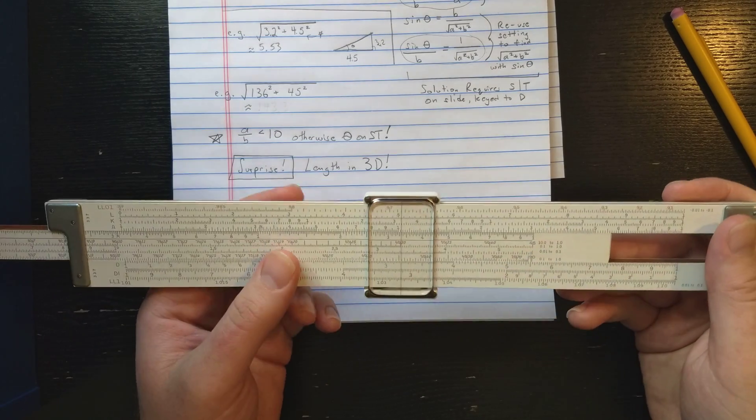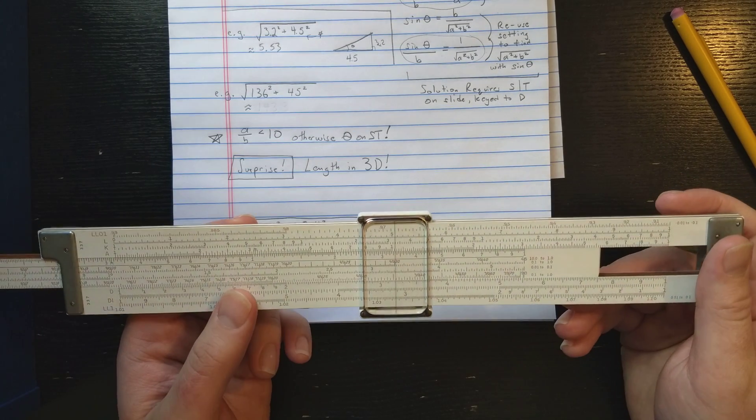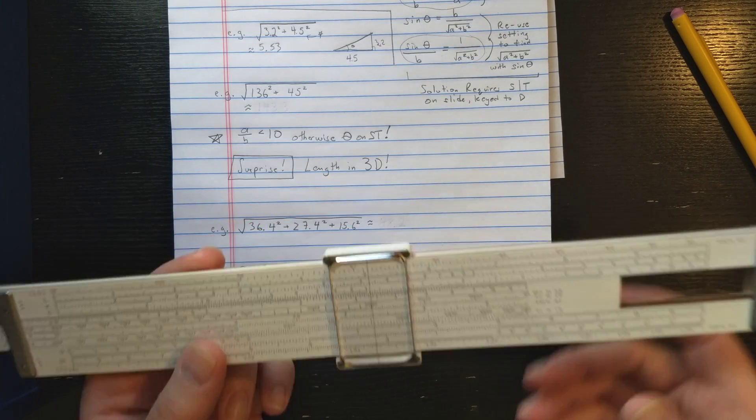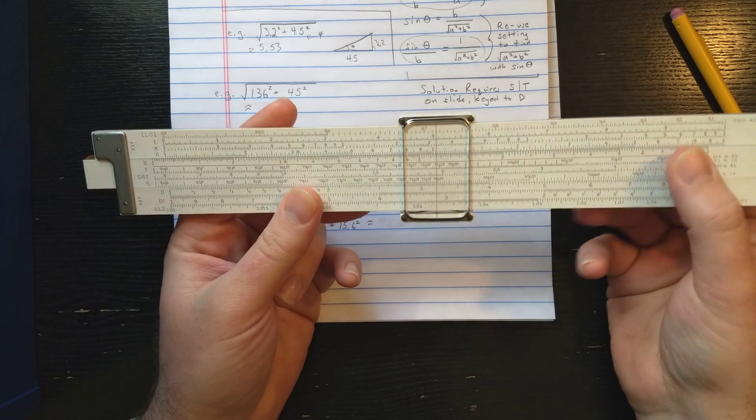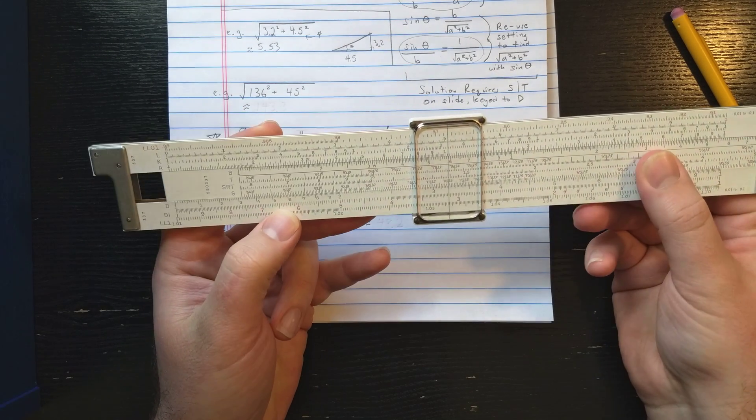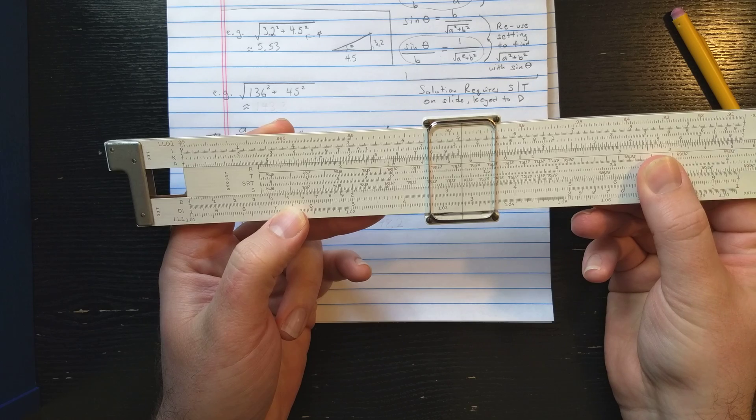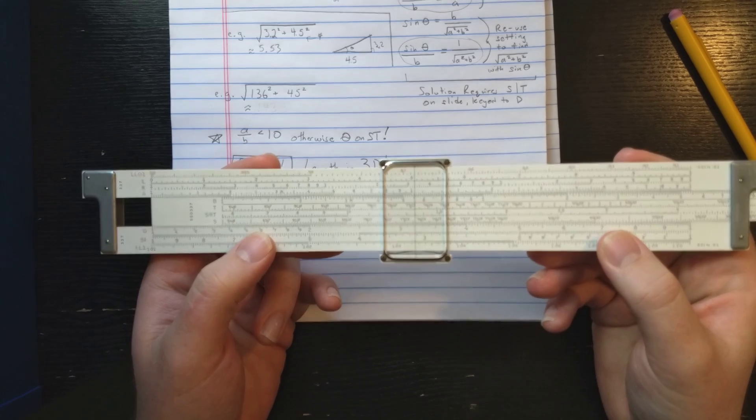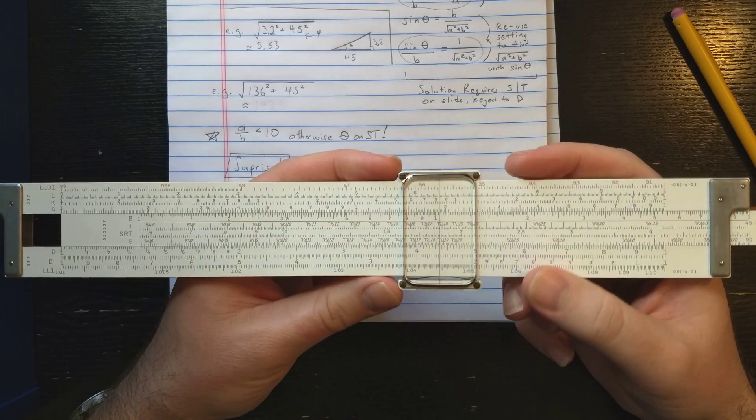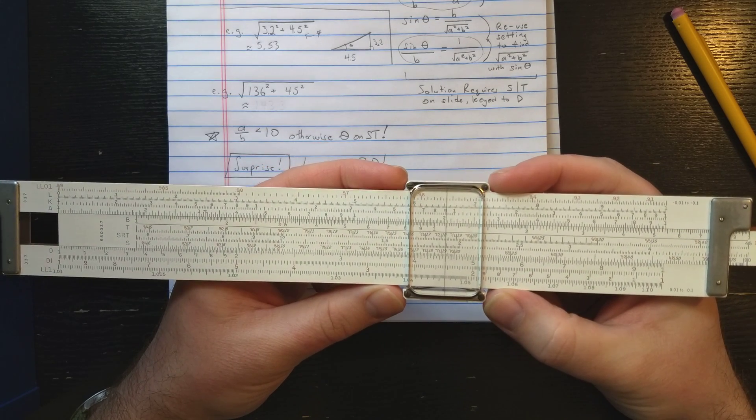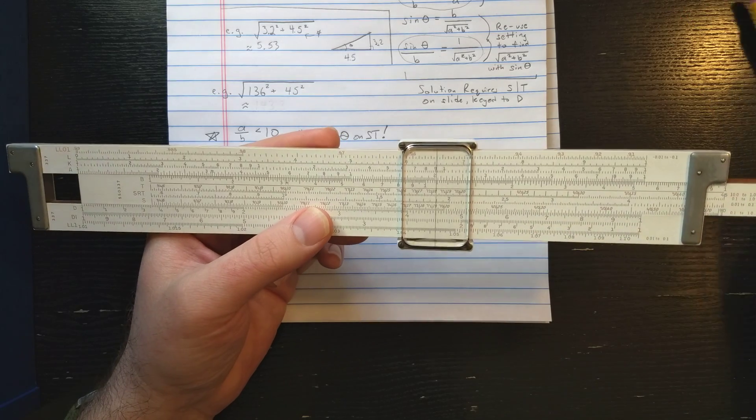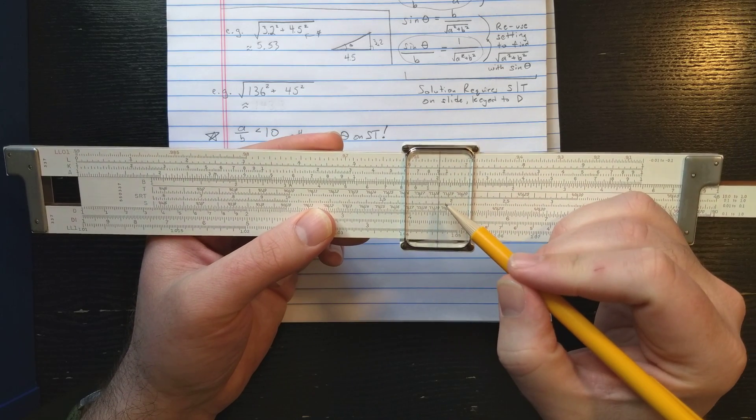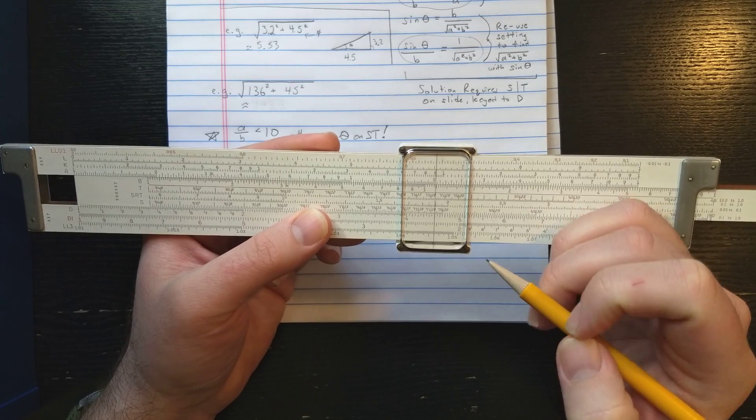Let's do another example. Here's square root 136 squared plus 45 squared. Again, start with the larger number. So I'm going to put that larger number 136 here at the index on D. Then I'm going to move cursor out to 45 on D. Then I'm going to read on the T scale about angle 18.3.